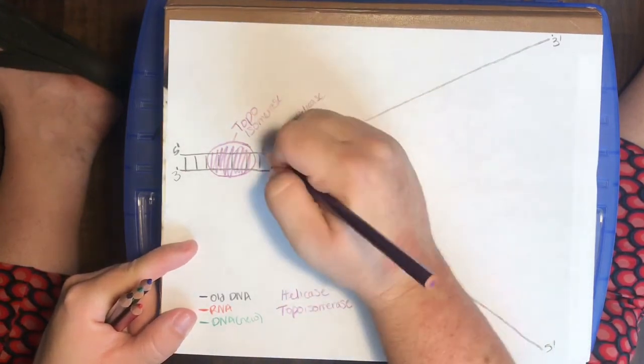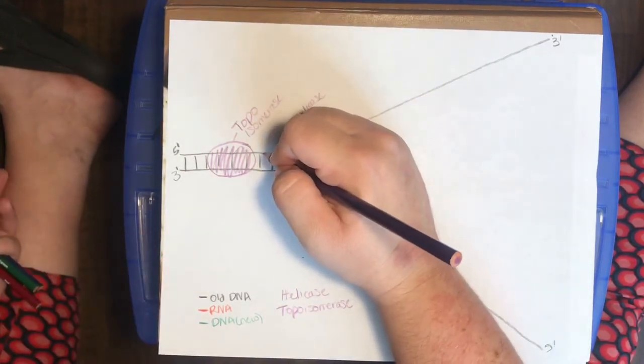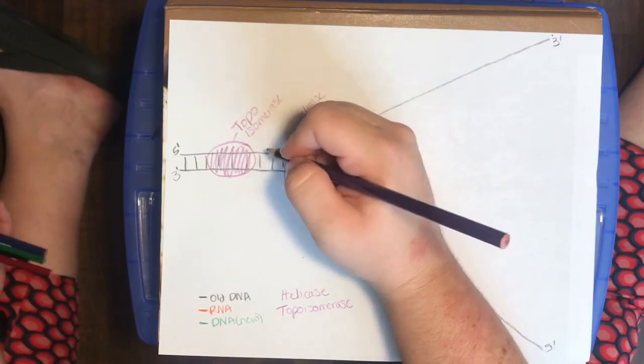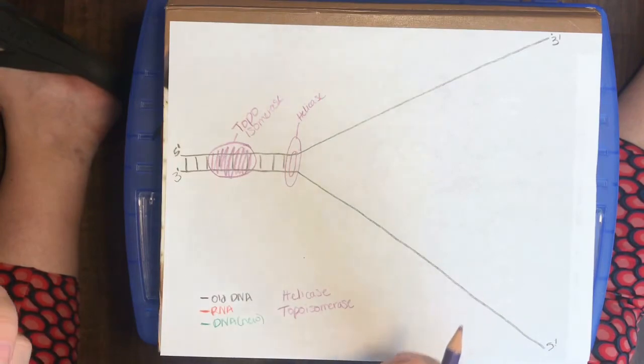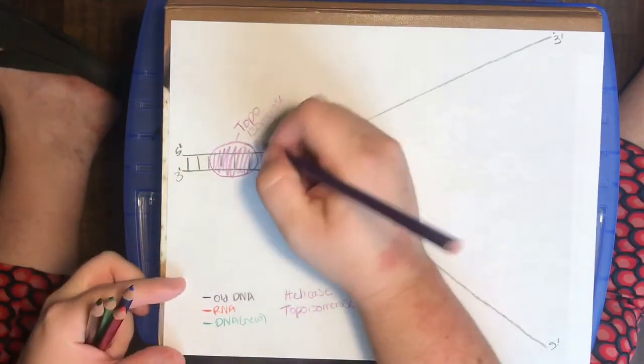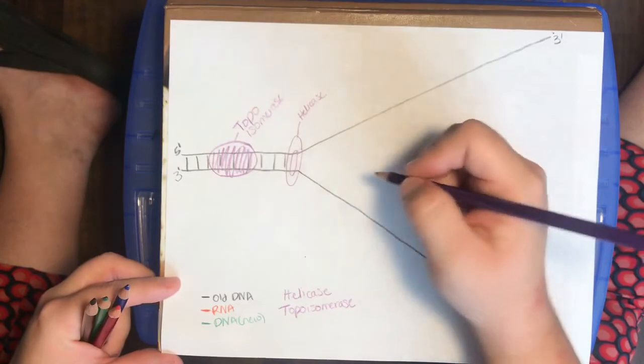Topoisomerase, what it's going to do is go ahead of the replication fork and identify those areas of tension. It's going to break the phosphodiester bonds that form between the sugars and the phosphates.